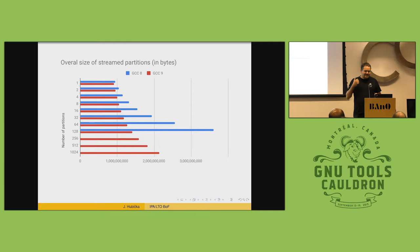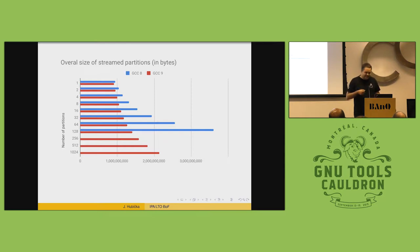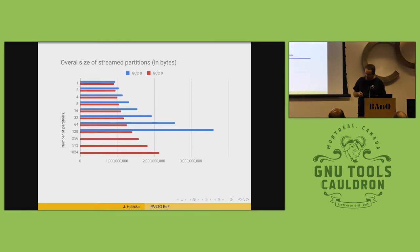This is a useful observation also for people working on debug info, because I think DWZ has the same problem. If DWZ was modified to merge types based on ODR names, it would probably see similar reductions in the number of types. This is the first notable change that makes me happy, because I didn't know where the problem was and I was nervous about it for years.